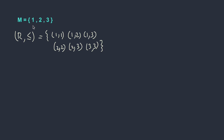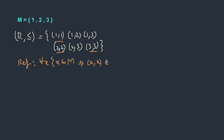Look at the numbers. For 1 we have (1,1), for 2 we have (2,2), and for 3 we have (3,3). A relation in which for every element x in the set, if we have the pair (x,x), then that relation is called a reflexive relation. So reflexive means: for all x, if x belongs to set M, then (x,x) should belong to the relation R.